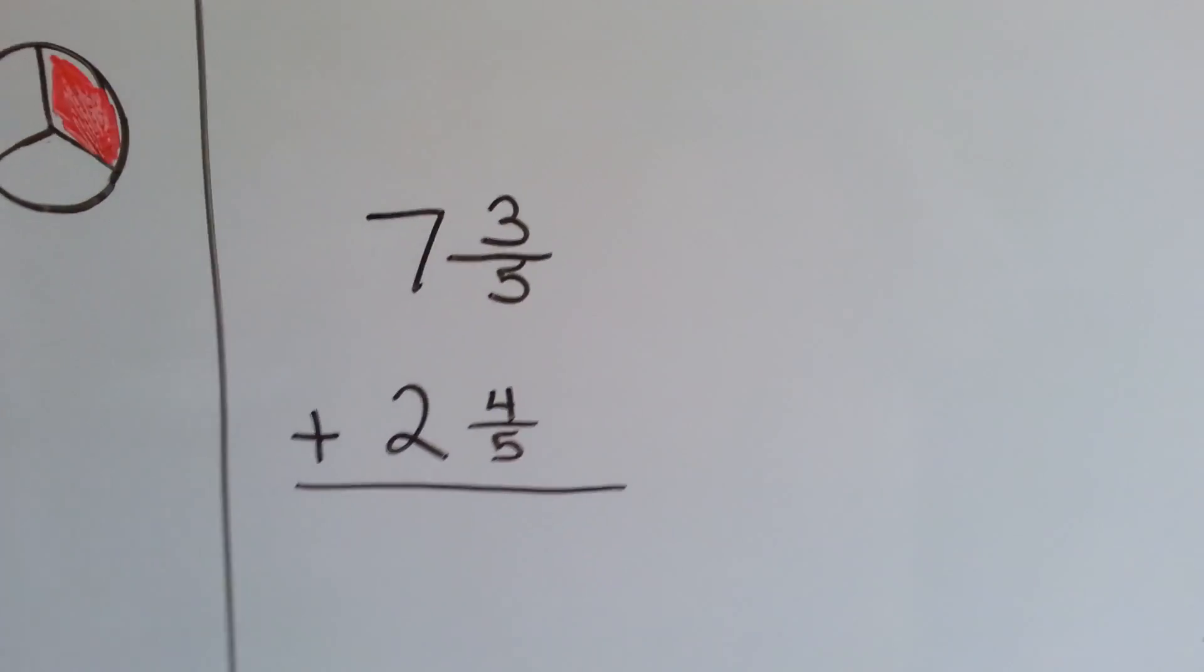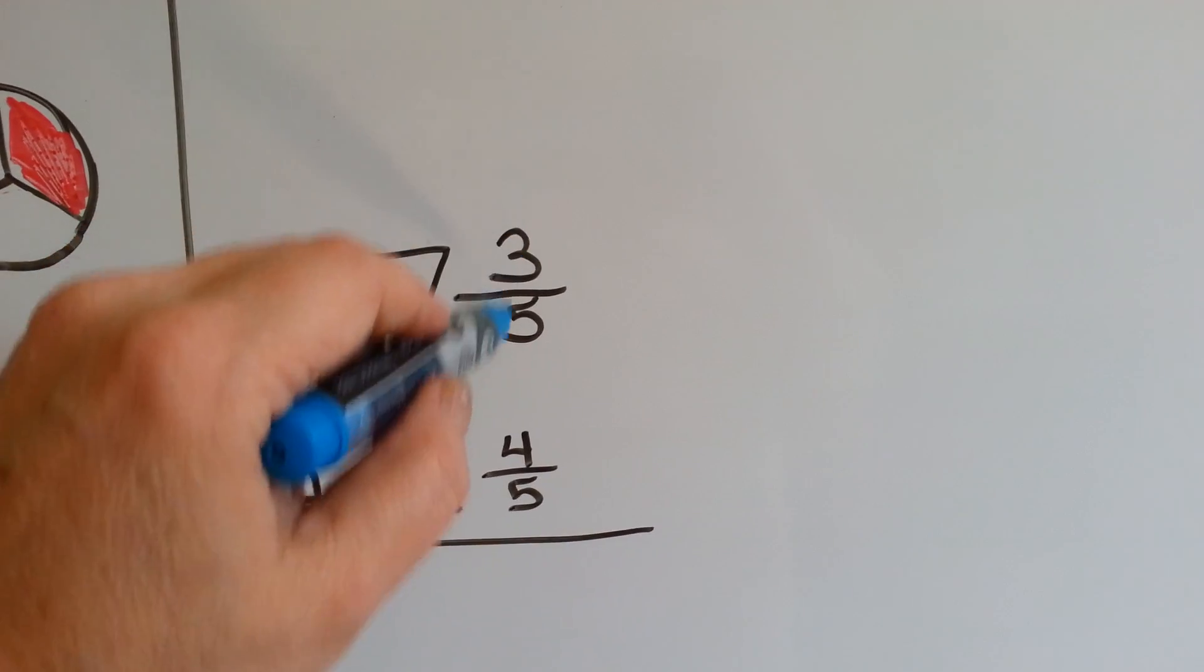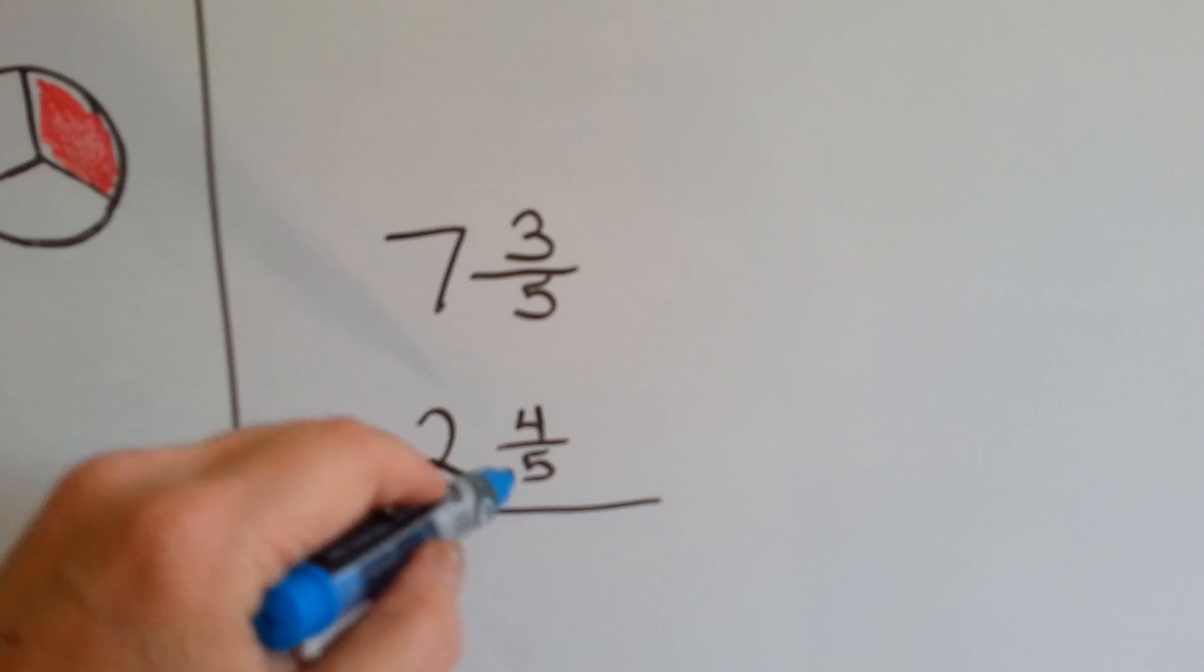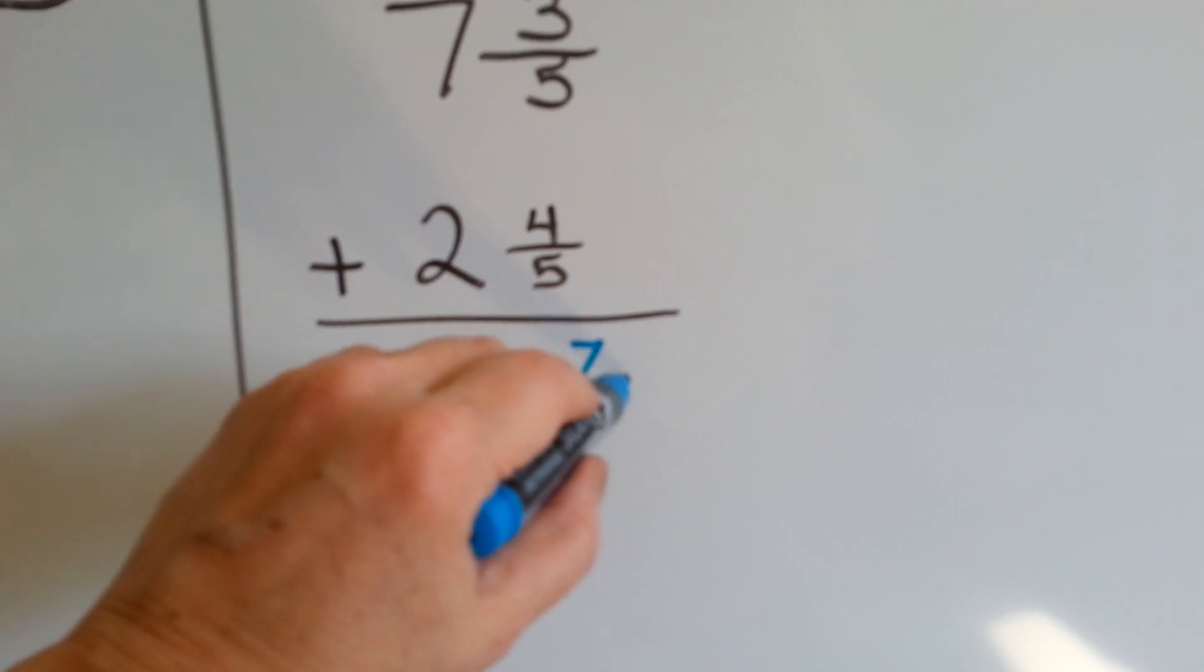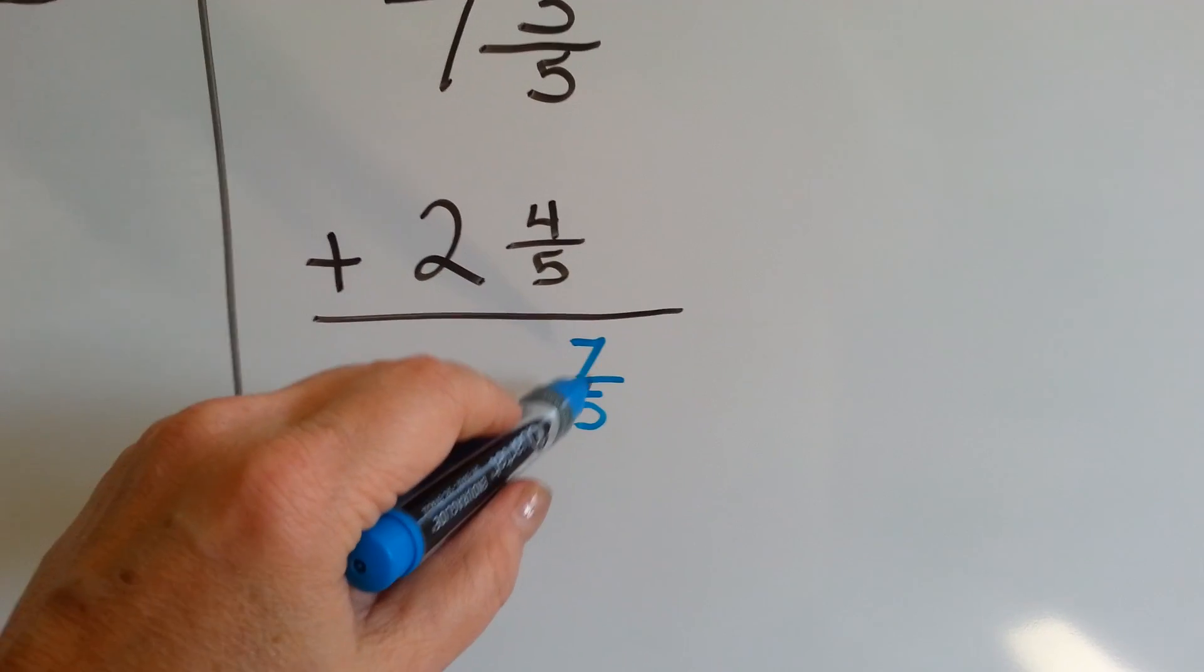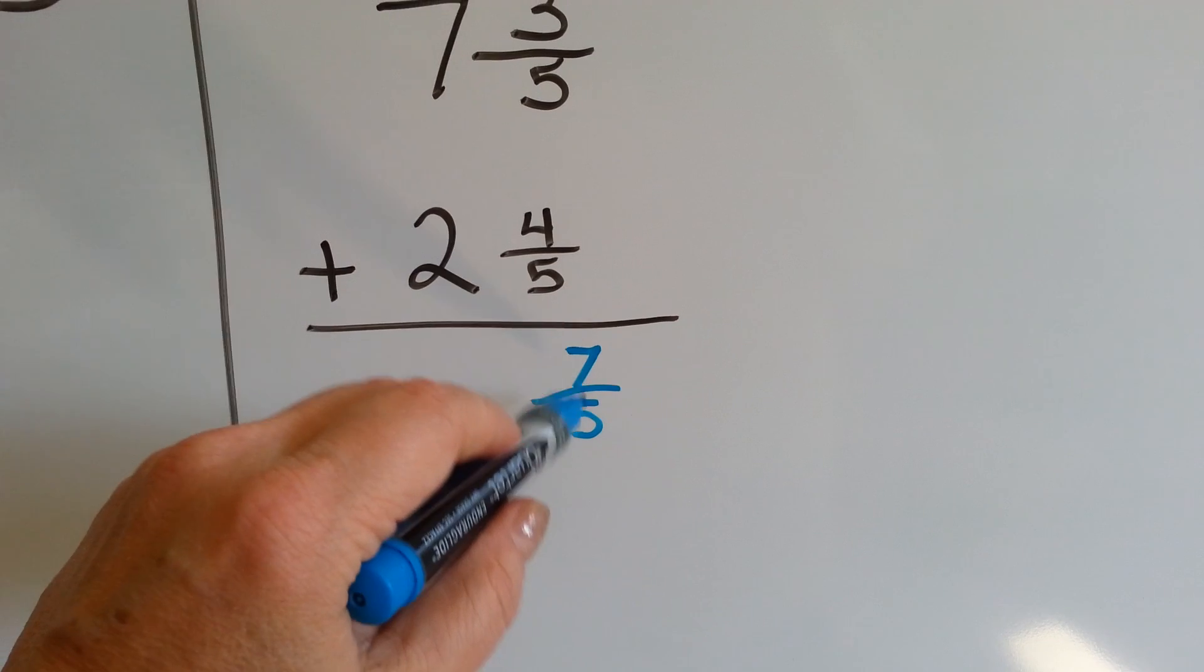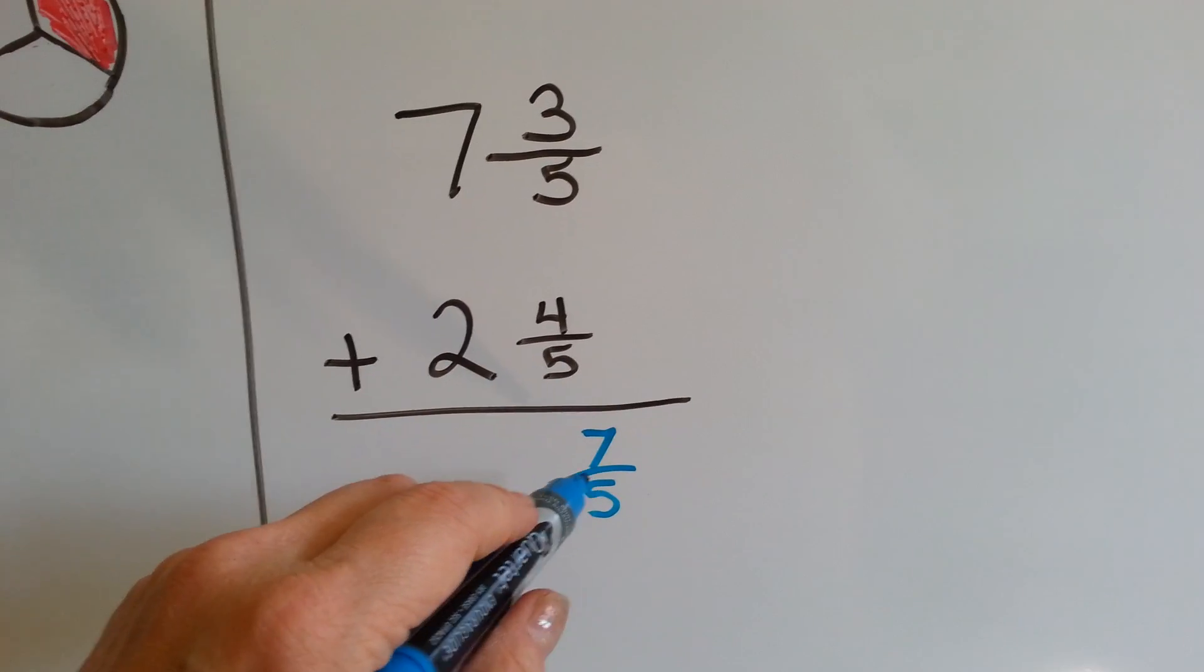Let's try this one. Let's add the fractions. We have 3/5 and 4/5. Well, 3 and 4, 3 plus 4 is 7. That's going to give us 7/5. Out of the 7/5, can we get a 5/5? A whole? Yeah, we can, can't we?